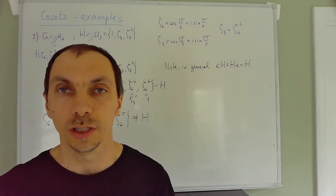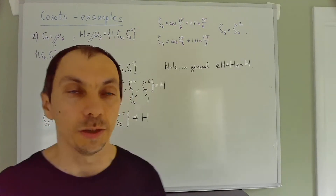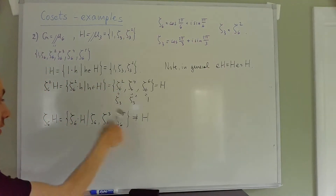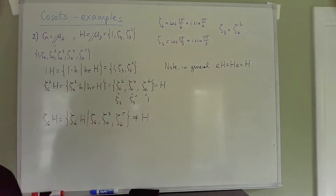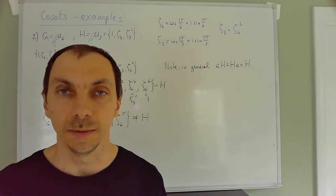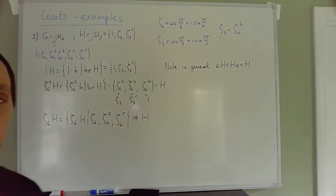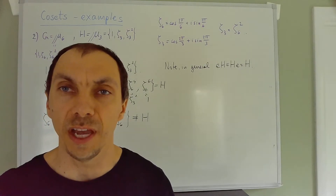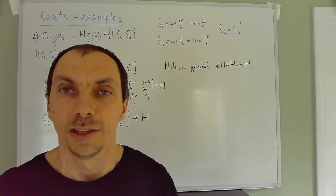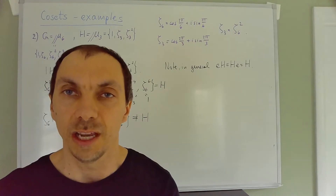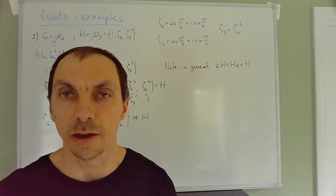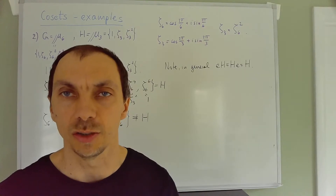You can try the remaining elements and you'll see that whenever you use an even power of ζ₆ you get H, and whenever you use an odd power you get this other coset. So there are only two possibilities. We'll prove in the next video that cosets either are identical — having the same elements — or they share absolutely no elements.